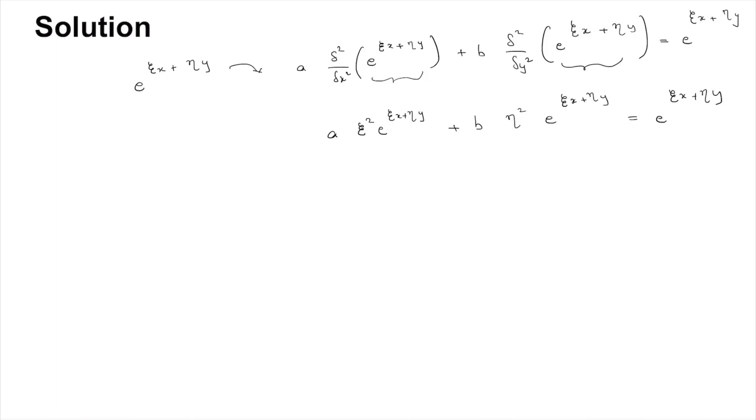And if you take out the common terms and cancel on the left and right hand side, you get these terms cancelling e^(zeta x + eta y), and this gives us a·zeta² + b·eta² = 1.